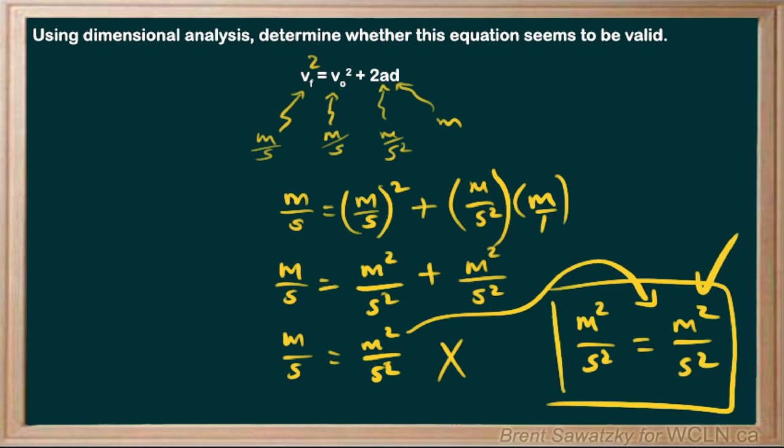So to answer our question, the equation as it was presented to us is not valid. And this may be a situation where we recognize that and we go back and double check and recognize that we made a mistake in writing it down. And in fact, putting that squared there will sort it all out.